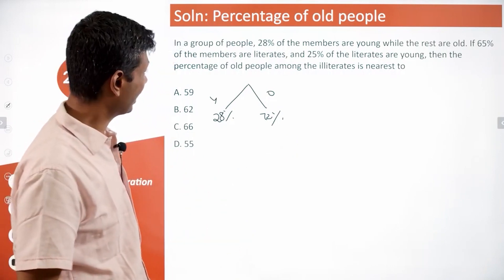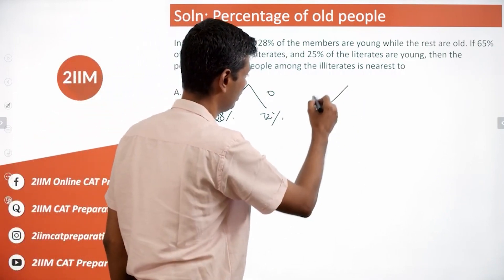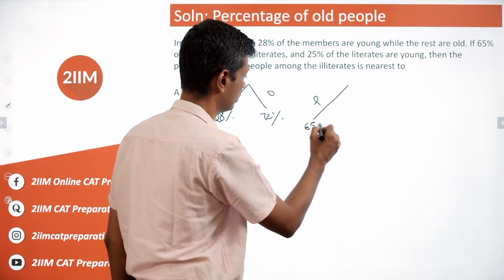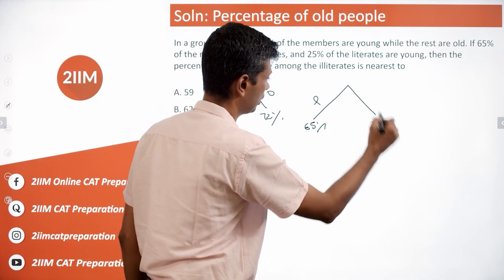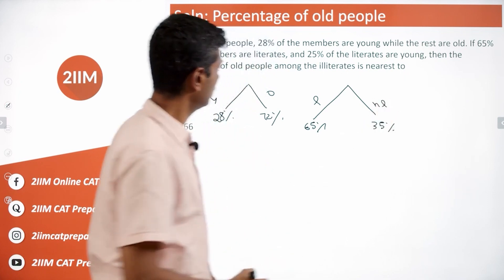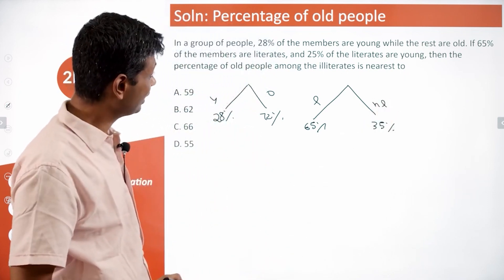65 percent are literates, so literates are 65 percent. That means 35 percent are not literate. And 25 percent of the literates are young.